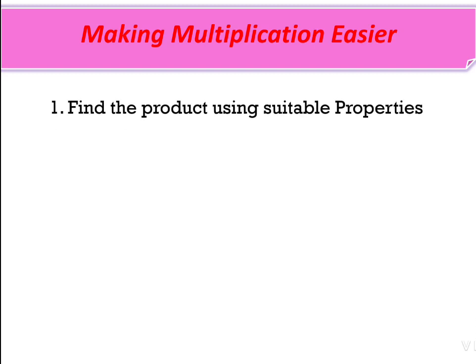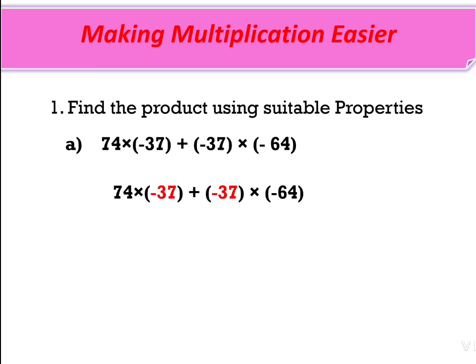Find the product using suitable properties. Here we don't multiply using our usual multiplication method, but we use some properties. The first question is: 74 × (−37) + (−37) × (−64). Clearly we can see one speciality — minus 37 is common. There are two parts divided with an addition sign.